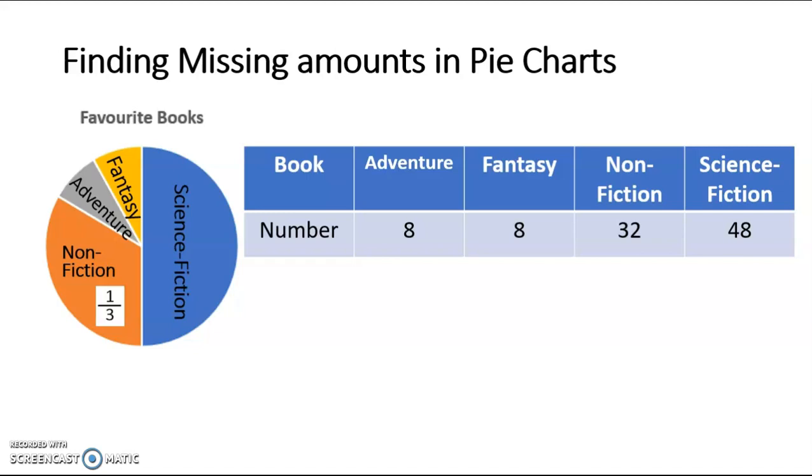Half of 96 people enjoyed science fiction books. Half of 96 is 48. One third of the people enjoyed non-fiction books. One third of 96 is 32. If we add the 32 and 48 together, we have 80, which means that there were 16 people remaining who needed to be shared between those two other genres of book, fantasy and adventure. 16 divided by 2 is 8. So 8 people enjoyed adventure books and 8 people enjoyed fantasy books.